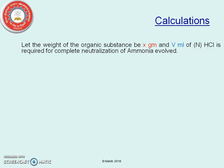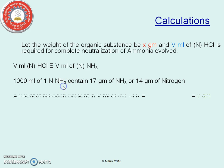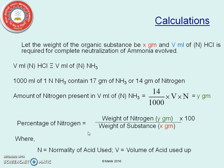Now, coming to the calculation. Let the weight of the organic substance be X g, and V ml of N HCl is required for complete neutralization of ammonia evolved. 1000 ml of 1 normal ammonia contains 17 g of ammonia or 14 g of nitrogen, where normality equals molarity. Amount of nitrogen present in V ml of N ammonia = (14/1000) × V × N. The percentage of nitrogen = (Y g / X g) × 100, where N is the normality of the acid and V is the volume taken.